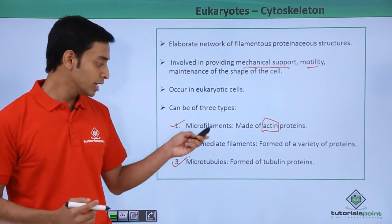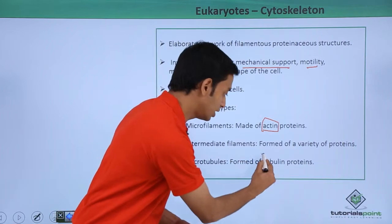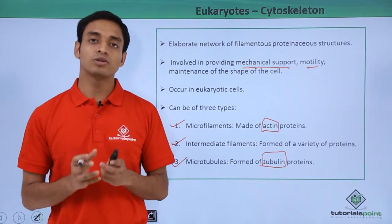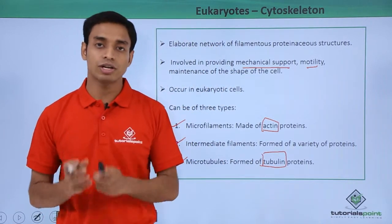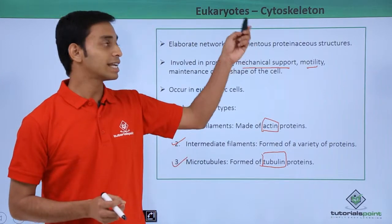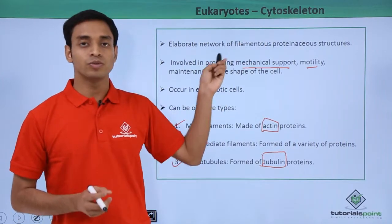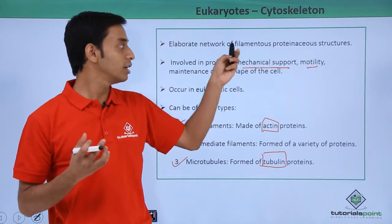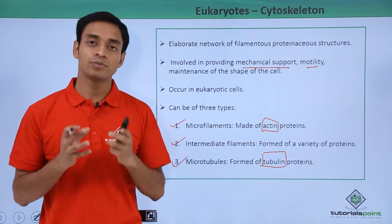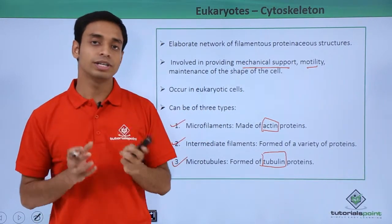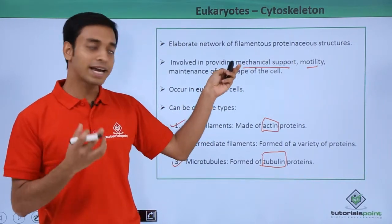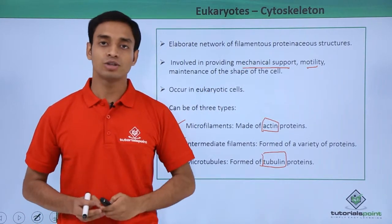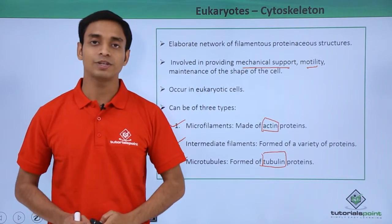Microtubules are a very common form and are formed of tubulin proteins. In this video we have talked about a cellular structure of eukaryotic cells — the cytoskeleton — which is a filamentous, proteinaceous structure that provides shape, motility, and mechanical support to the cells. I hope you have understood. Please like this video. Thank you.